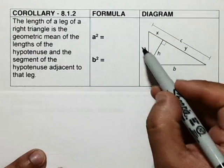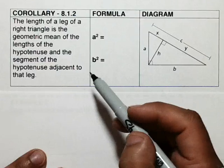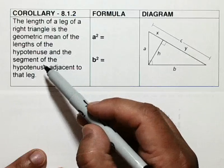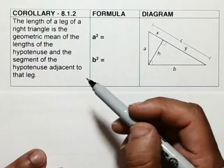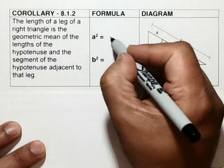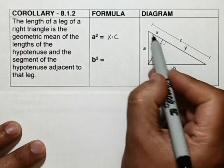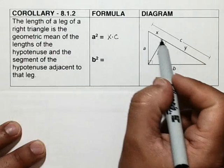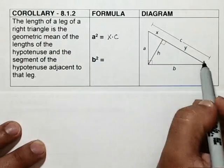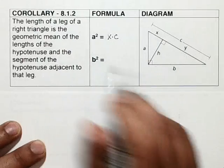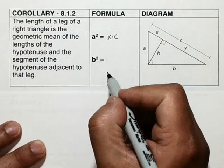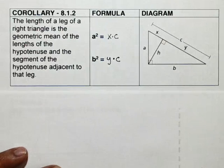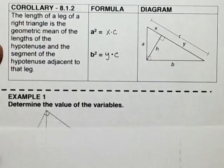We can also find the length of the legs of a right triangle using the geometric mean, by taking the length of the hypotenuse and the segment of the hypotenuse adjacent to that leg. So using this diagram, A squared equals X times C, where X is the short distance next to A and C is the entire length of the hypotenuse. And B squared equals Y times C.